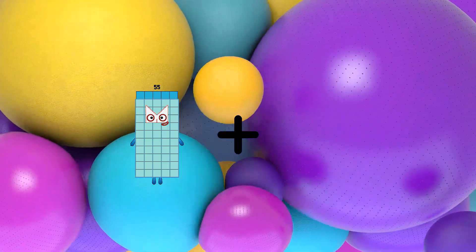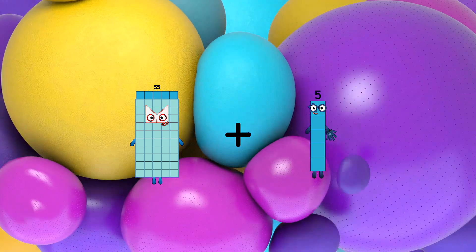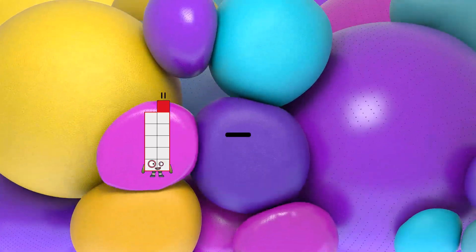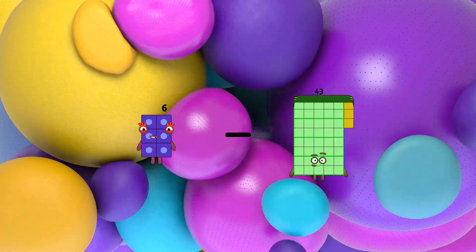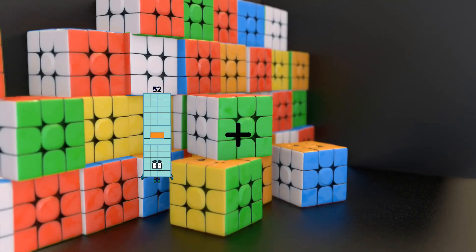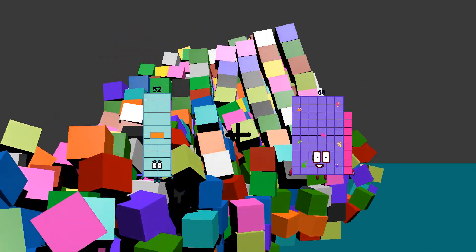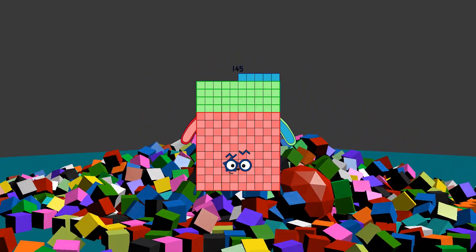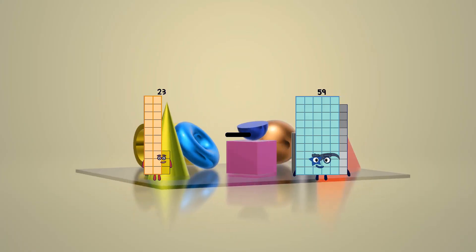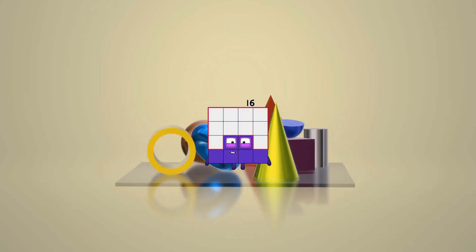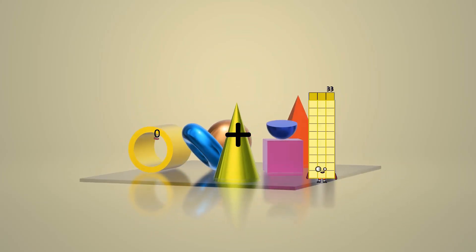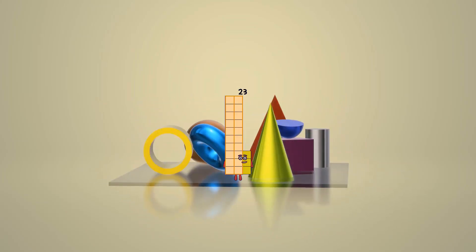55 plus 103 equals 158. 6 minus 1 equals 5. 52 plus 93 equals 145. 23 minus 7 equals 16. 0 plus 23 equals 23.